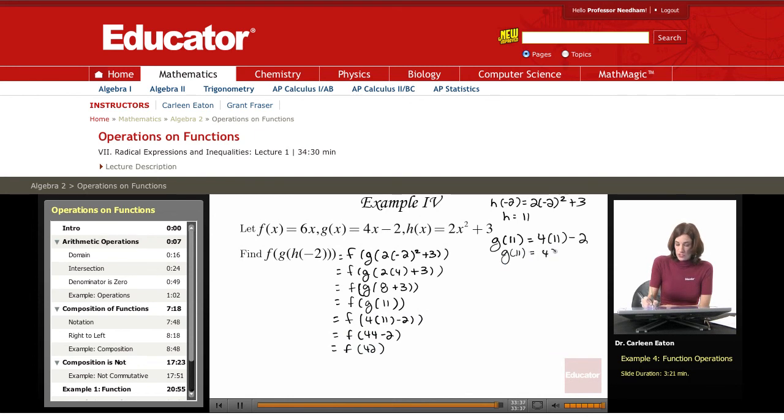Finally, I'm just left with f of 42, so I need to evaluate f of x when x is 42. So that's going to give me - I simply substitute in - and that's going to be 6 times 42, which is 252.